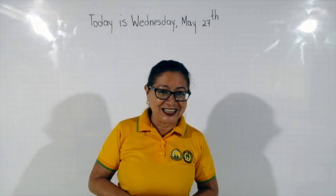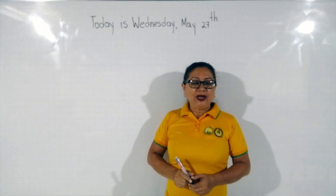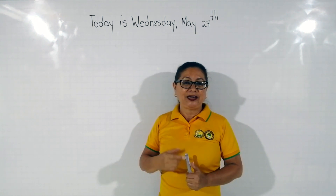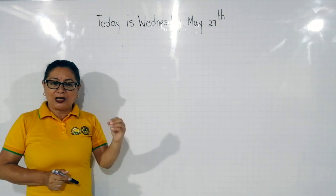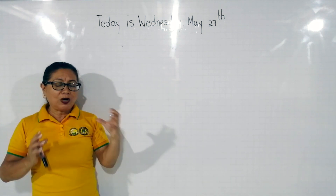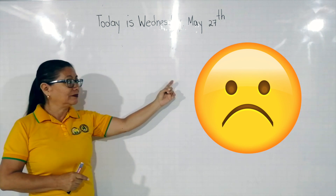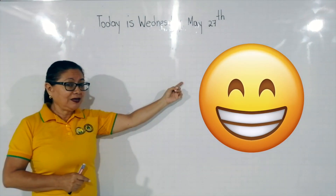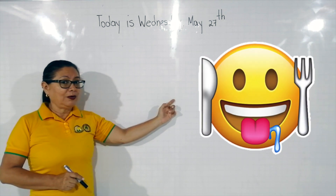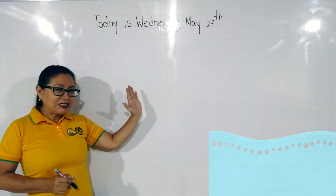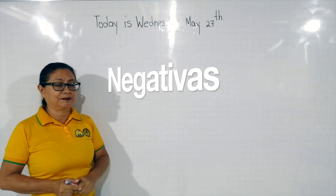Sí, tú estás feliz. Hoy vamos a continuar con nuestro proceso de enseñanza-aprendizaje. Vamos a repasar la temática que vimos la semana anterior. We are going to practice today. Vamos a practicar los diferentes estados de ánimo. Debo afirmar o negar si yo estoy triste — sad — si estoy feliz — happy — or scared, or sleepy, or angry. Con los estados de ánimo aprendidos, vamos a realizar oraciones afirmativas y negativas. Here we go.